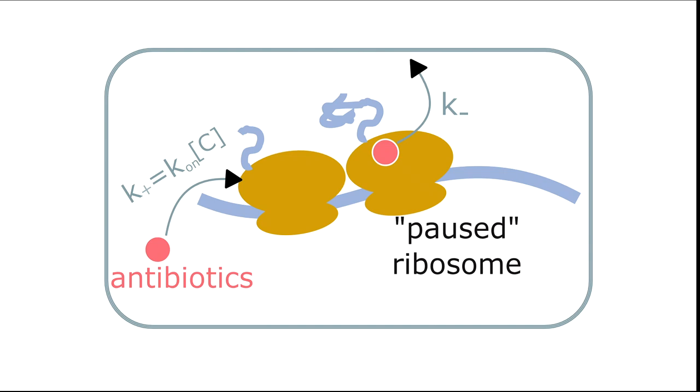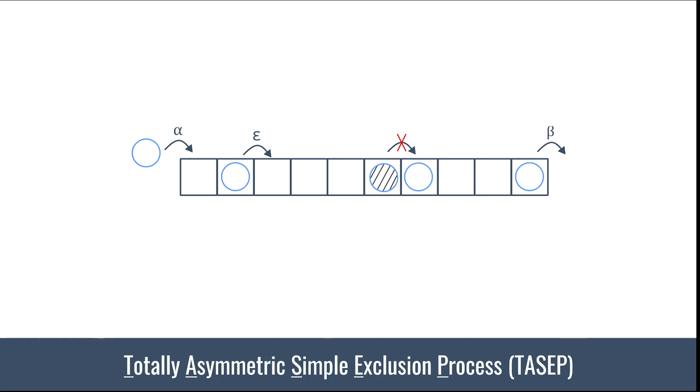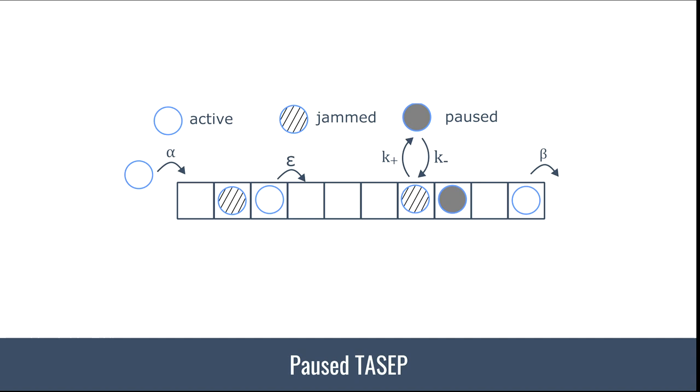We use the traffic model part of it. Luca gave a great talk on Tuesday introducing this, but you basically have a one-dimensional lattice where particles can enter with a rate alpha and unidirectionally hop along with rate epsilon. They obey the exclusion principle so they can't occupy the same site. The adaptation is that our particles can enter a pause state, so we effectively induce traffic jams.